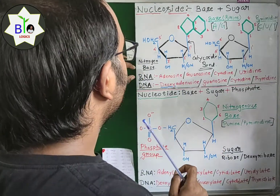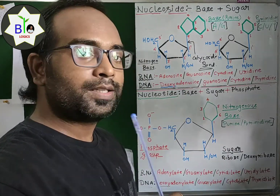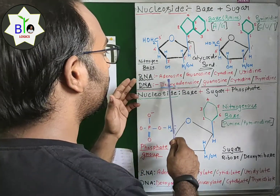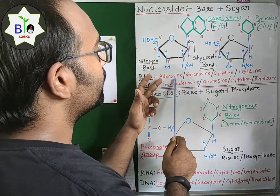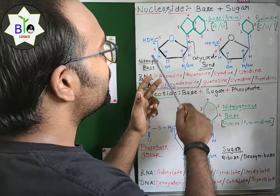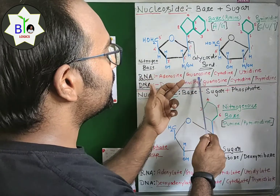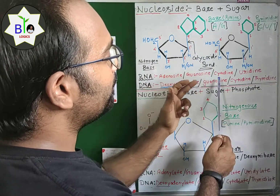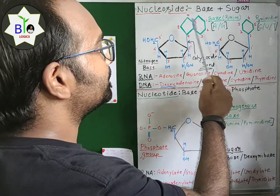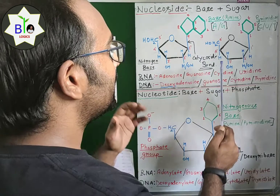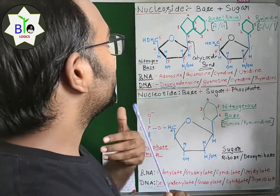Now, regarding the names given to nucleosides in RNA: if adenine is present as the nitrogenous base, the complete structure is called adenosine. If guanine is present, it is called guanosine. If cytosine is present, it is called cytidine. And if uracil is present as the nitrogenous base, it is called uridine.